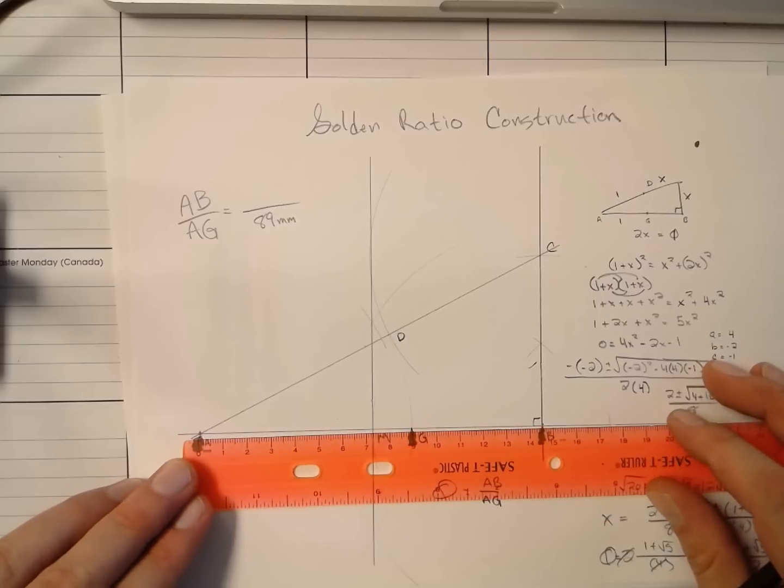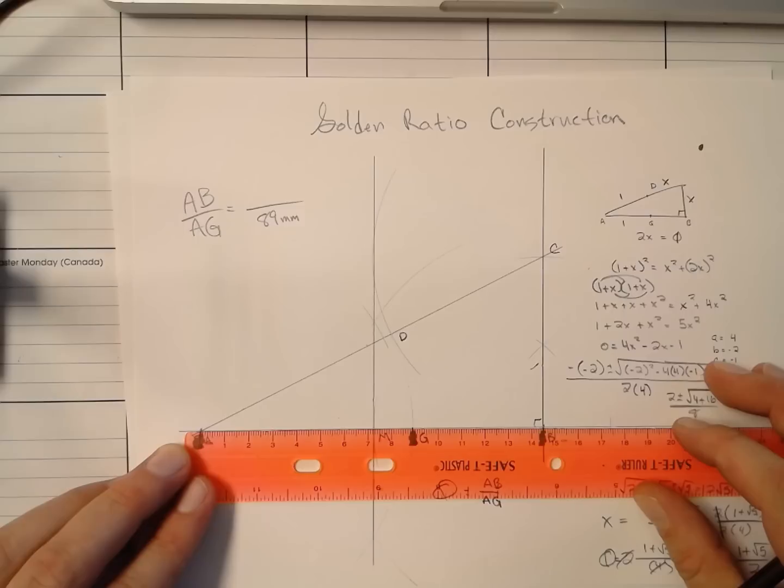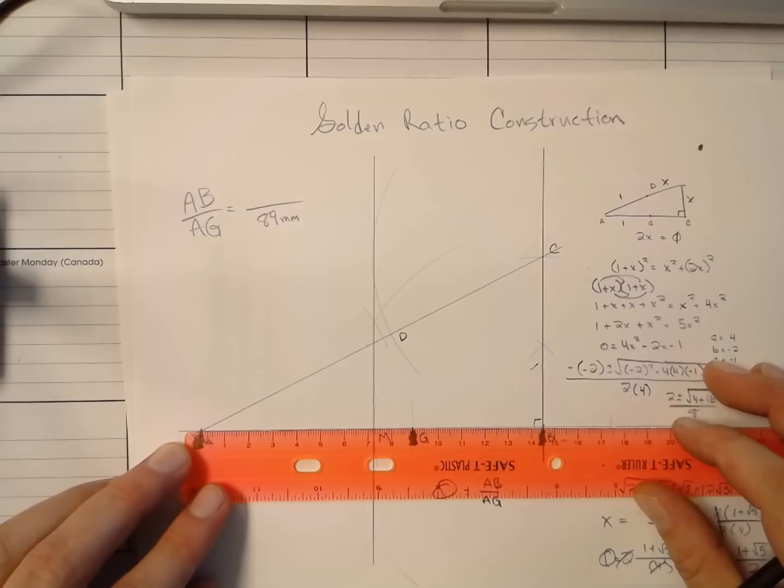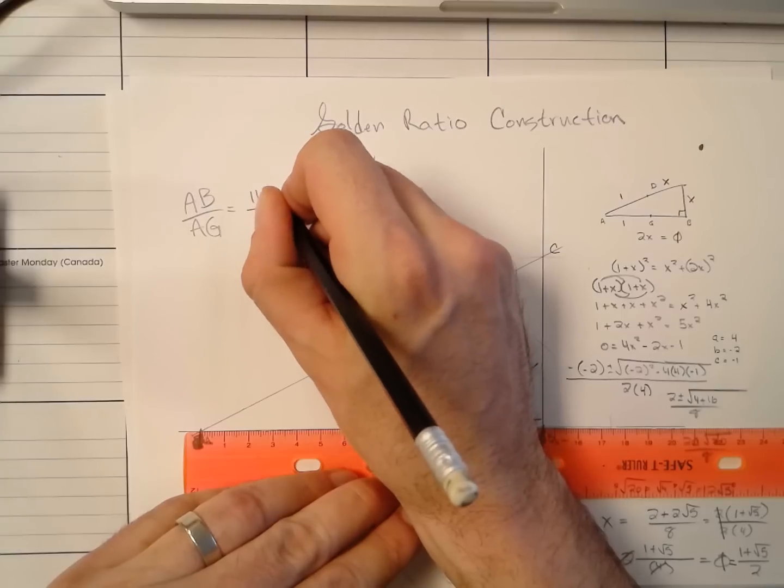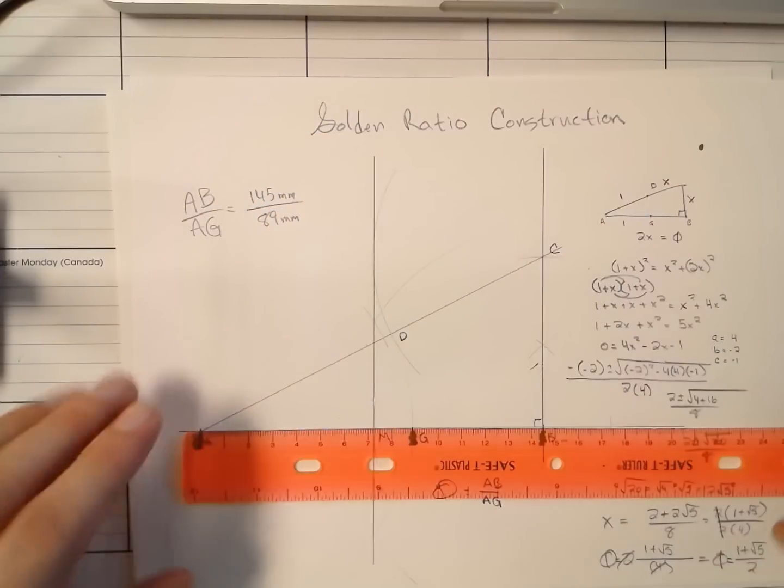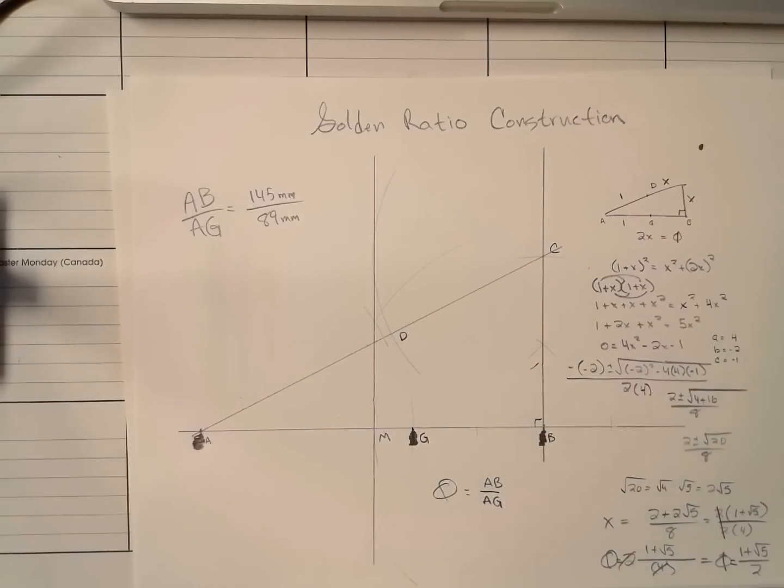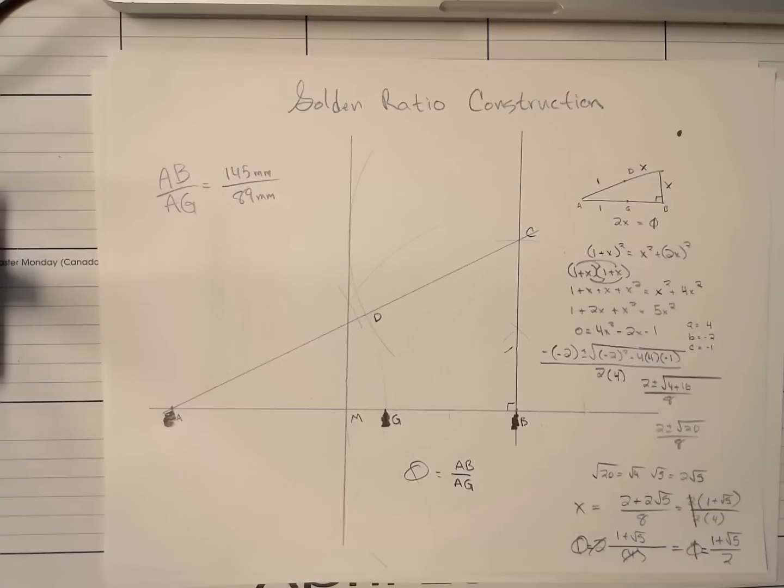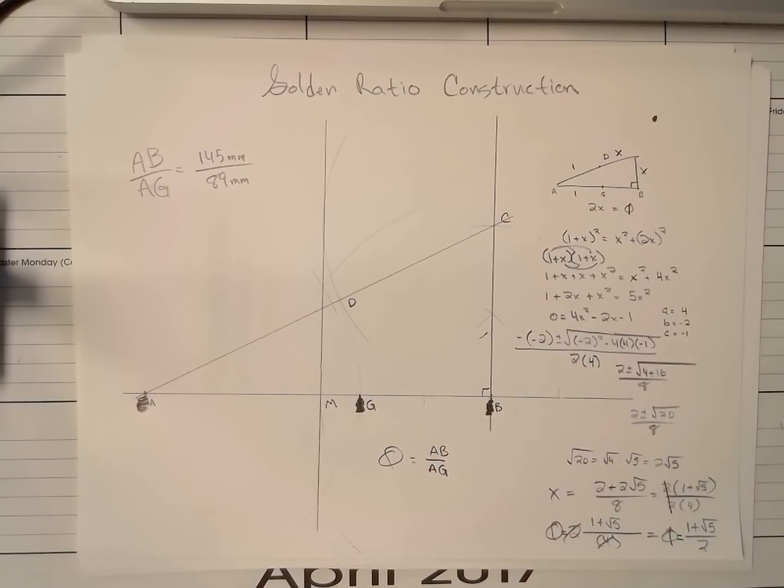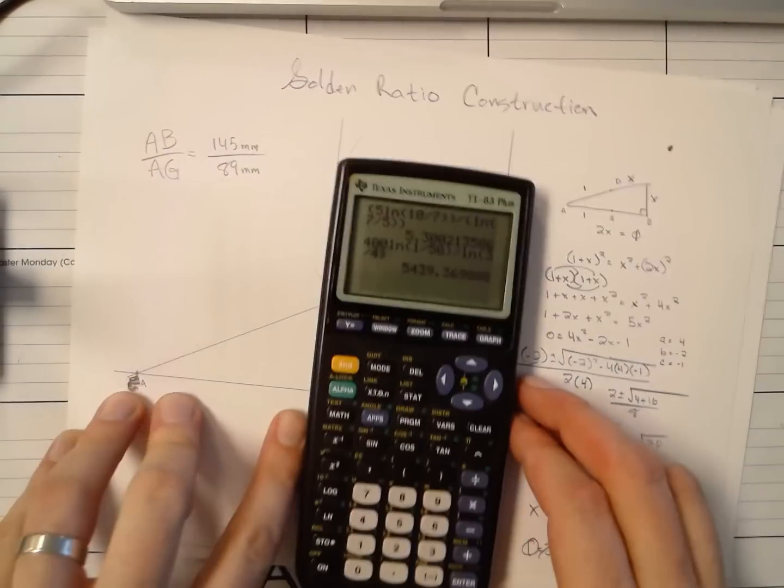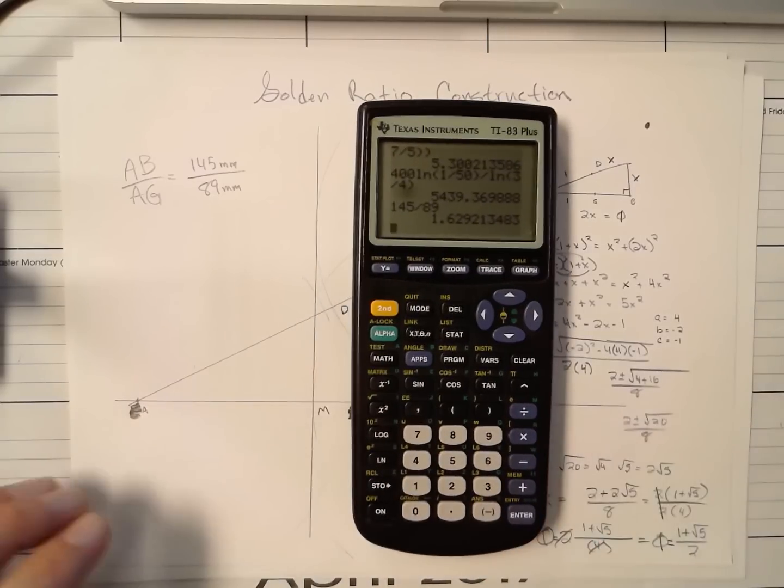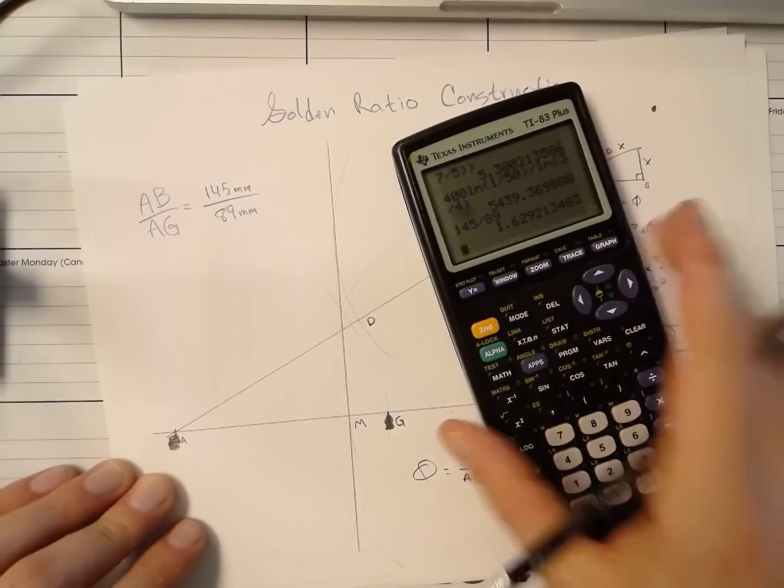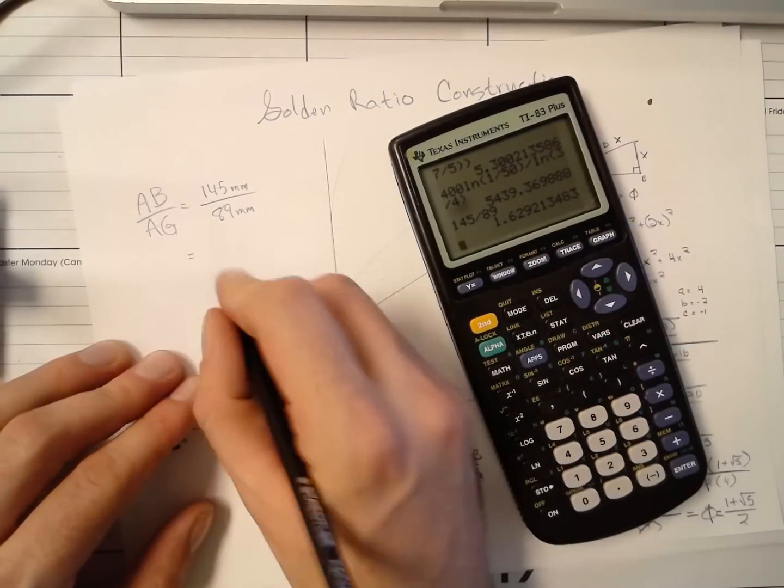And then AB, the whole thing, let me just double check. Yeah, 89 is good for that. Ooh, hey, that almost is 145 millimeters. It's like exactly between 14 and 15 centimeters. It's 145 millimeters. And now the moment of truth, friends. The moment of truth. How close did we come? How close did we come to 1 plus the square root of 5 over 2? It should be, like, really close, but sometimes it's not. 145 divided by 89 is...